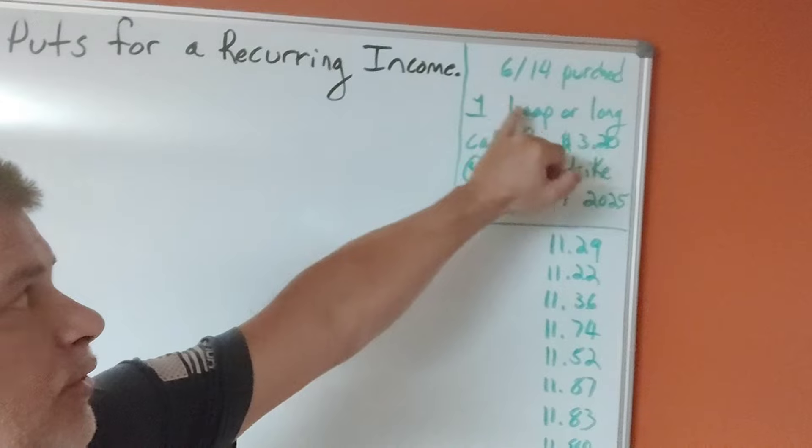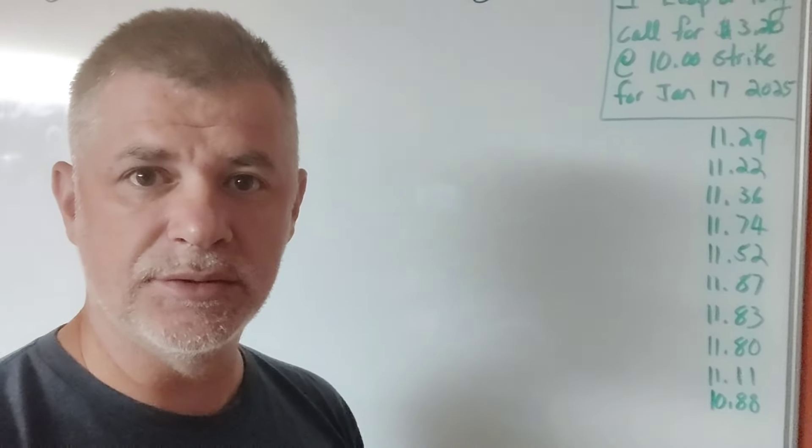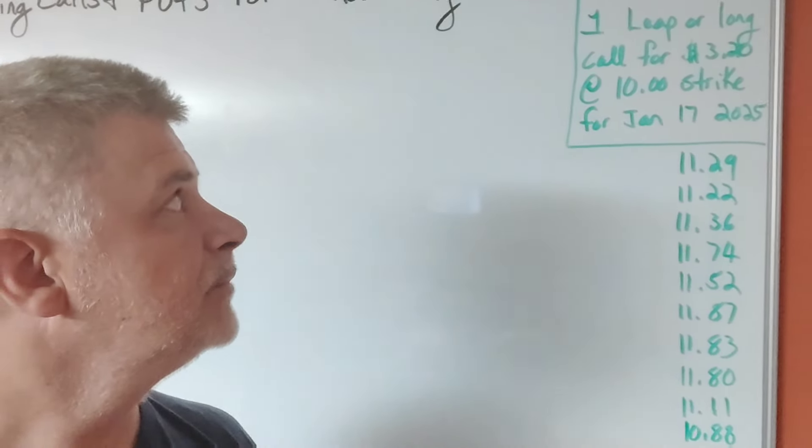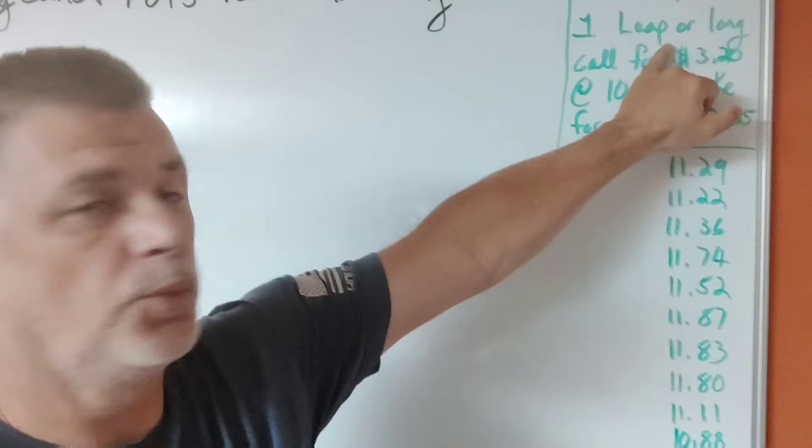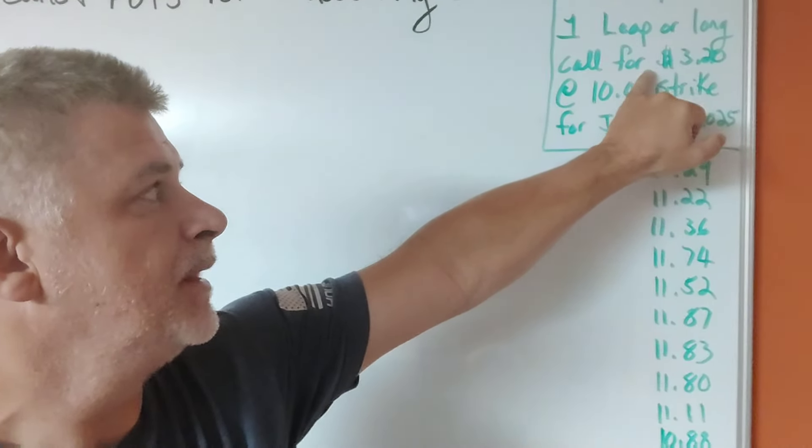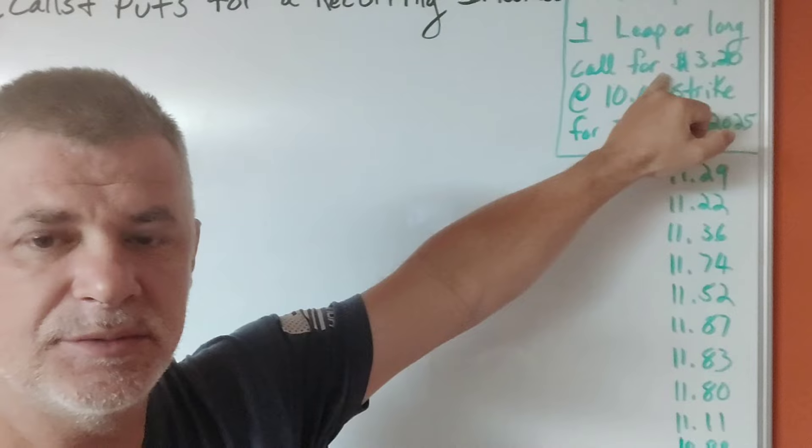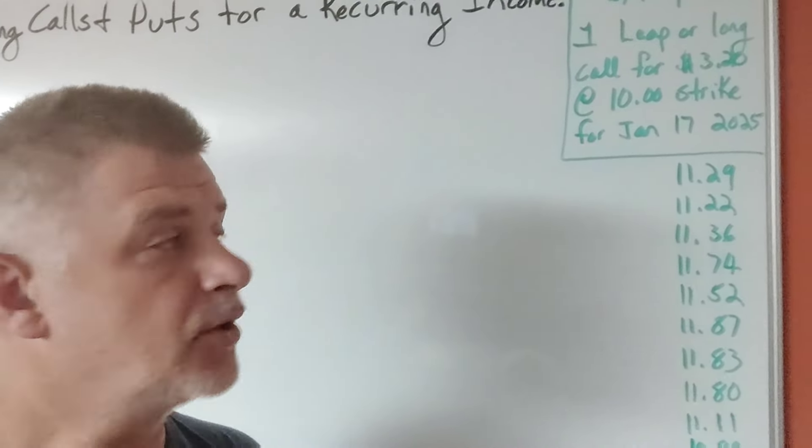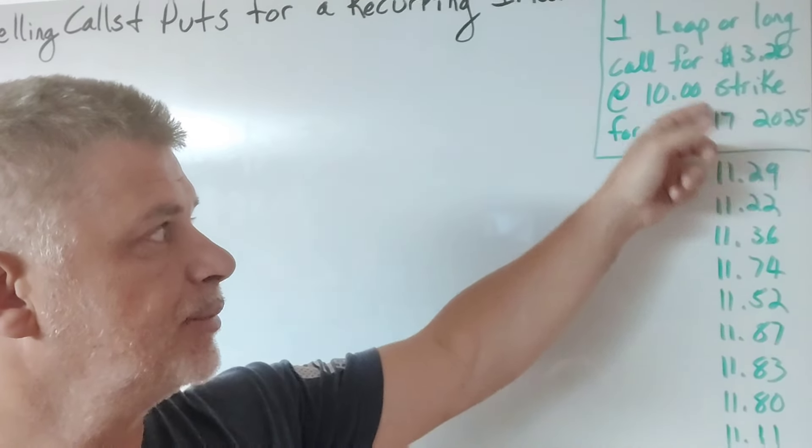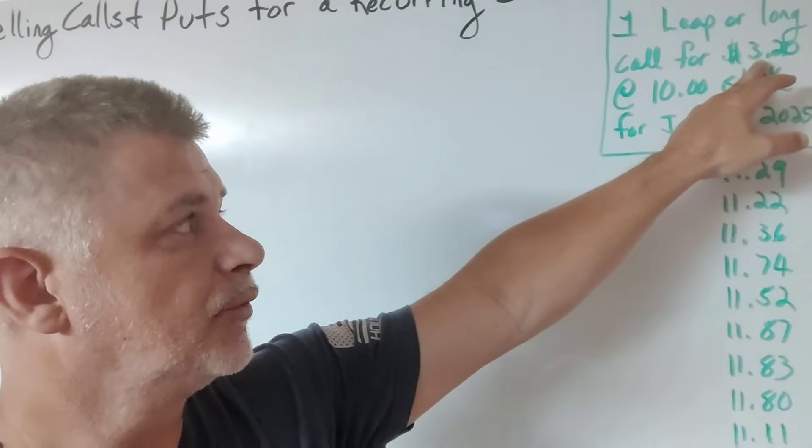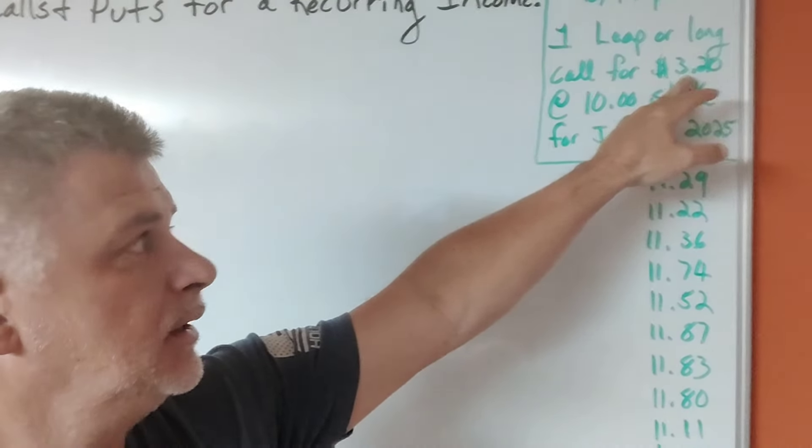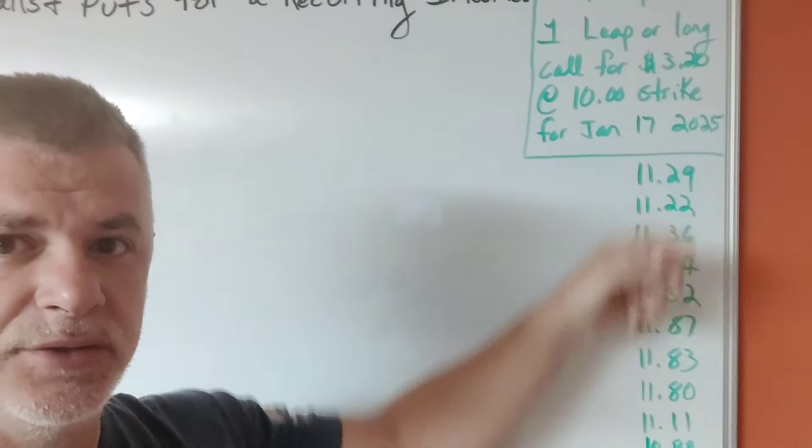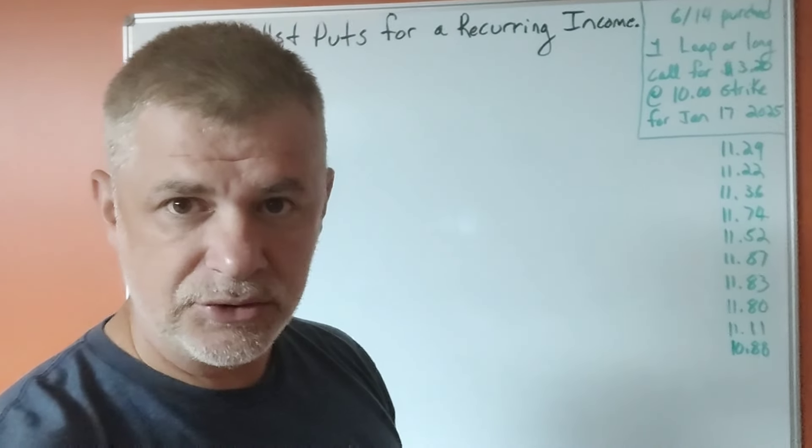On June 14th, I purchased—I made enough money selling calls and puts, I made four or five hundred dollars. I've been trading Rivian for a couple weeks now. So on June 14th, I purchased one leap or long call. Basically anything three months, six months out—basically over six months is considered a leap. Anyway, could be a year; people argue over that. Anyway, I purchased at the $10 strike price and I paid $320 for it.